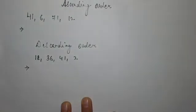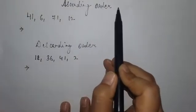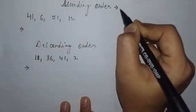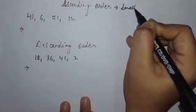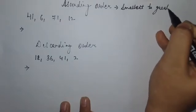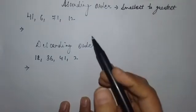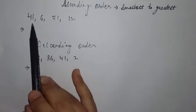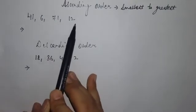Next is ascending order and descending order. Ascending order means numbers from smallest to greatest. So, here some numbers are given to you: 41, 6, 71, and 12.